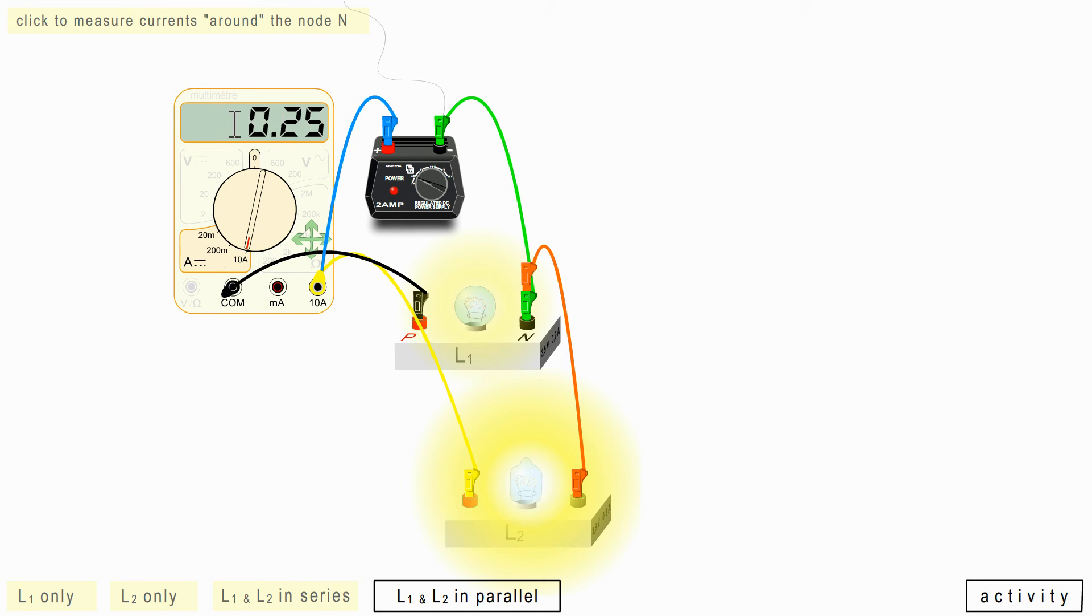I find 0.25 amps. We measured the intensity of the current when L1 was alone and we found 0.25 amps. I said I would talk about it again. I will come back to it now. This is the 0.25 ampere.